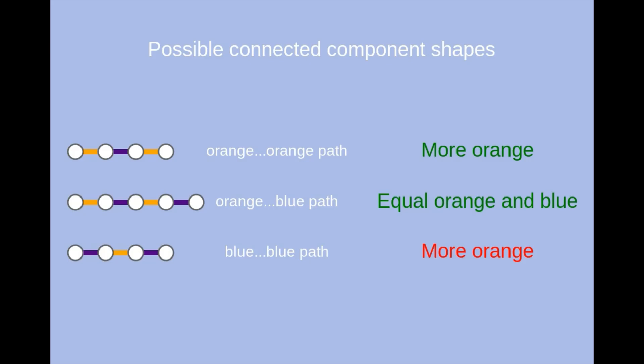Thus, whenever a matching is not maximum, there will always be an augmenting path to make it bigger. And it should be stressed that this isn't how we find augmenting paths, it's just a proof that one will exist when a matching isn't maximum.